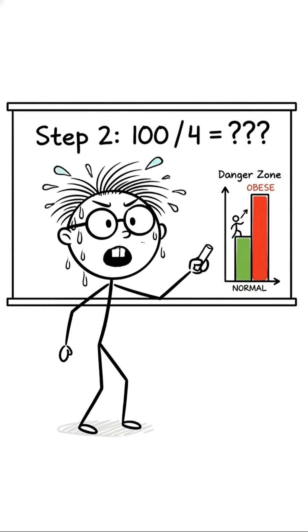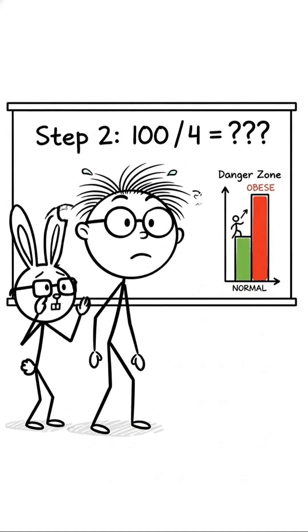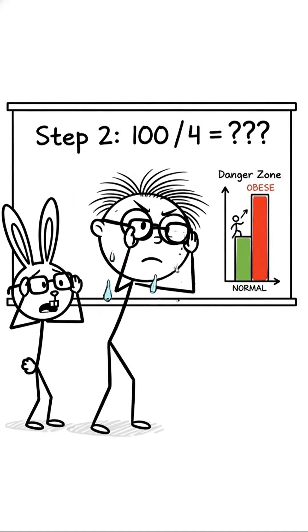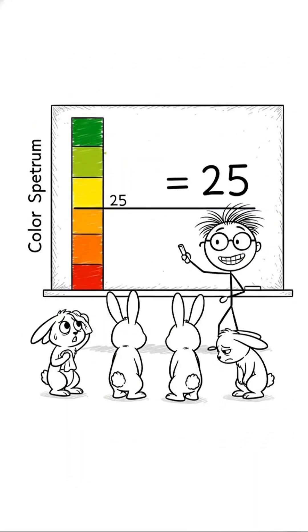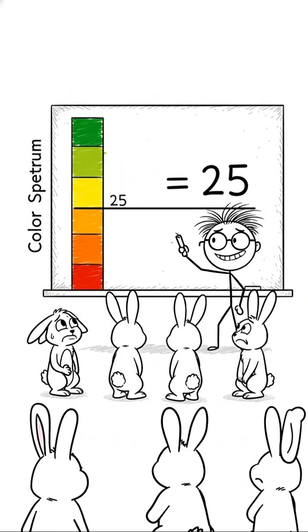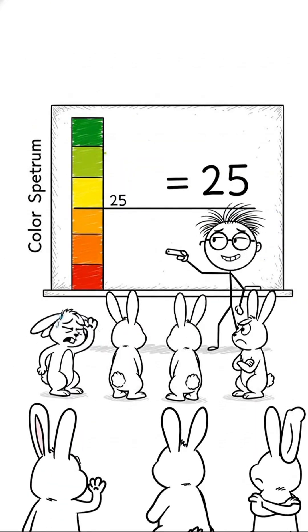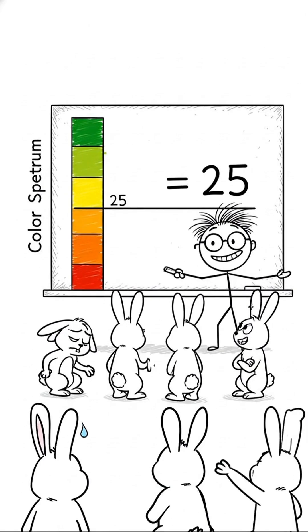If the number is over 25, he is in the danger zone. The tension is rising! The answer is 25. He is exactly on the borderline of normal and overweight. That was too close.